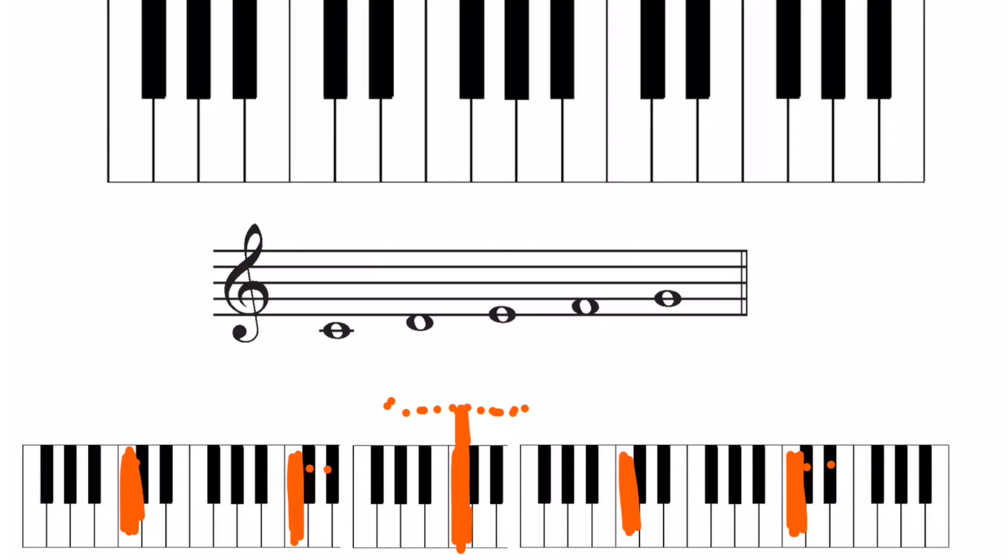And D is the note next door, so this is C, this is D. The next door, E is the note next door to that, and F is the note next door to that, and G is the white note next door to that. So we have C, D, E, F, G.